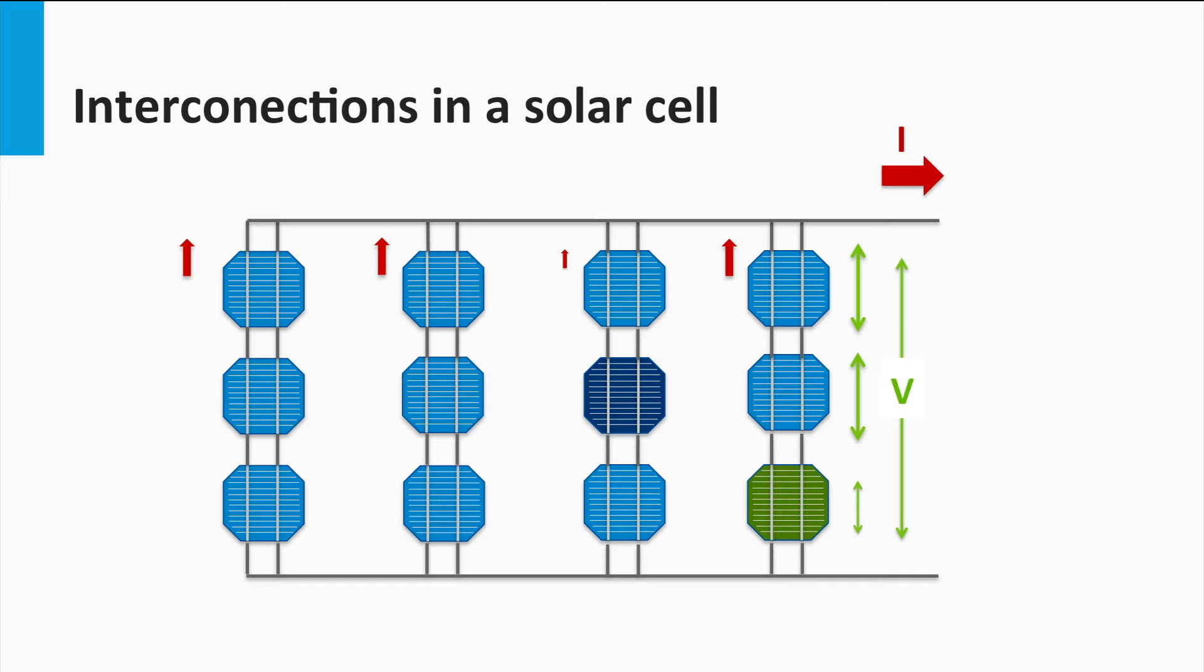This can be attributed to the non-homogeneity of the cells in mass production. Therefore, the module in practice performs a little subpar compared to the expected performance of the ideally matched and interconnected solar cells. This translates to a lower fill factor and efficiency at the module level.